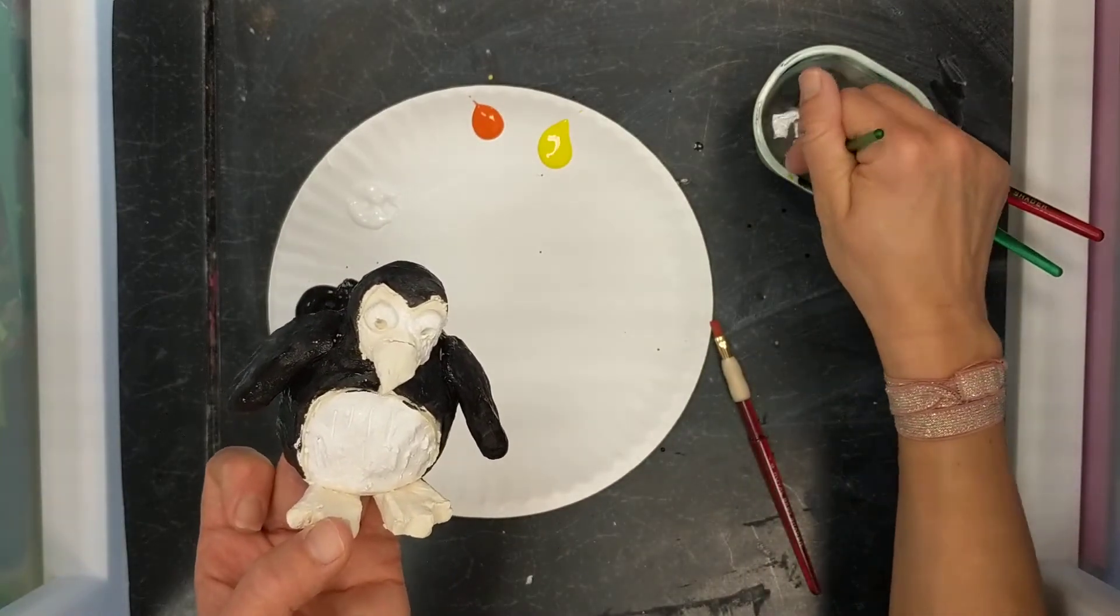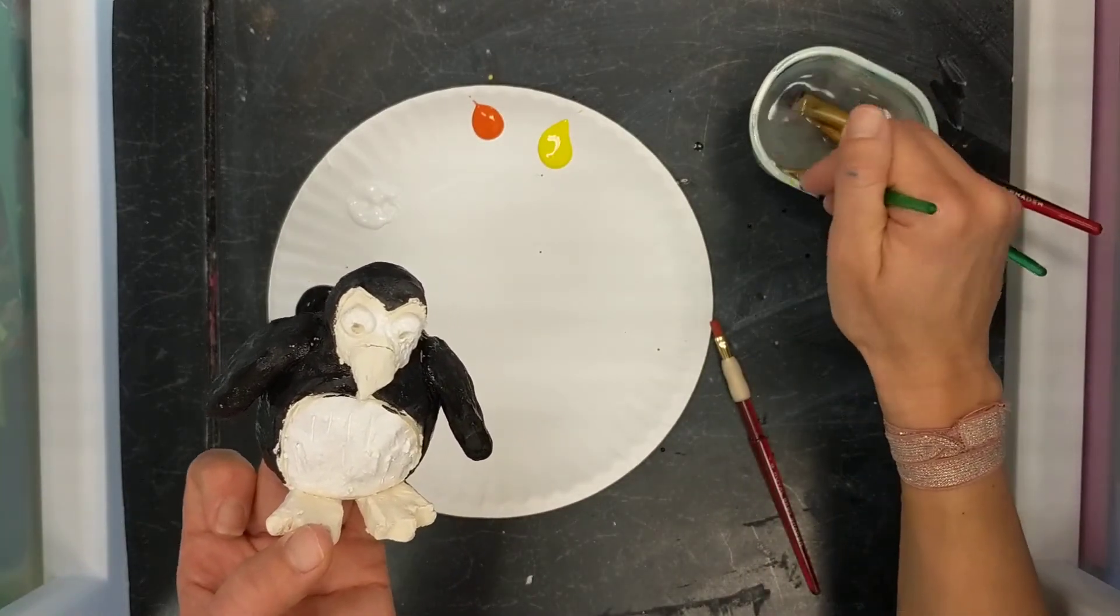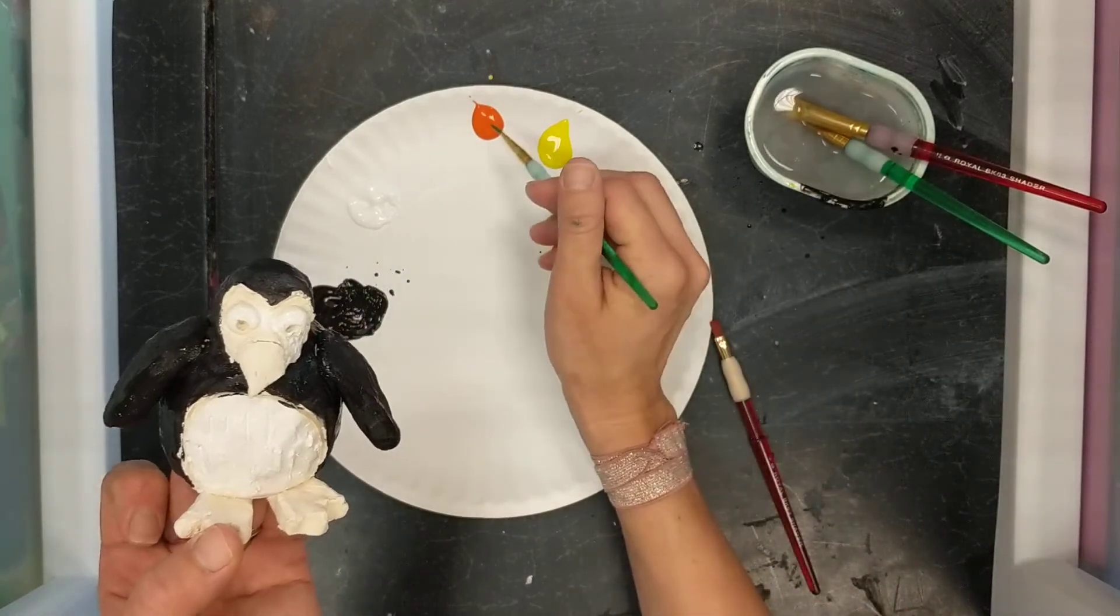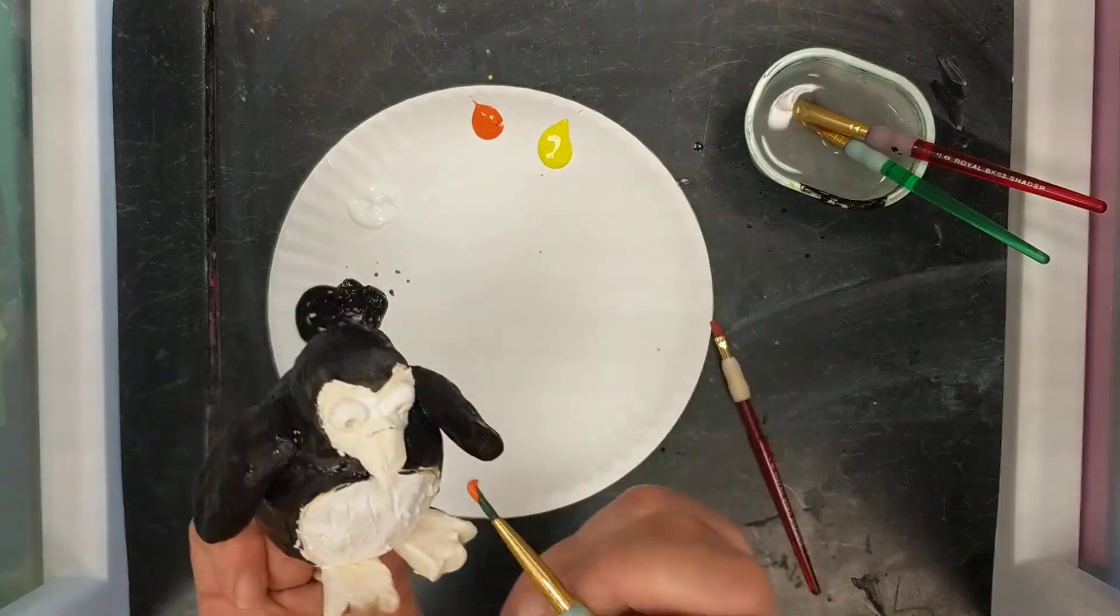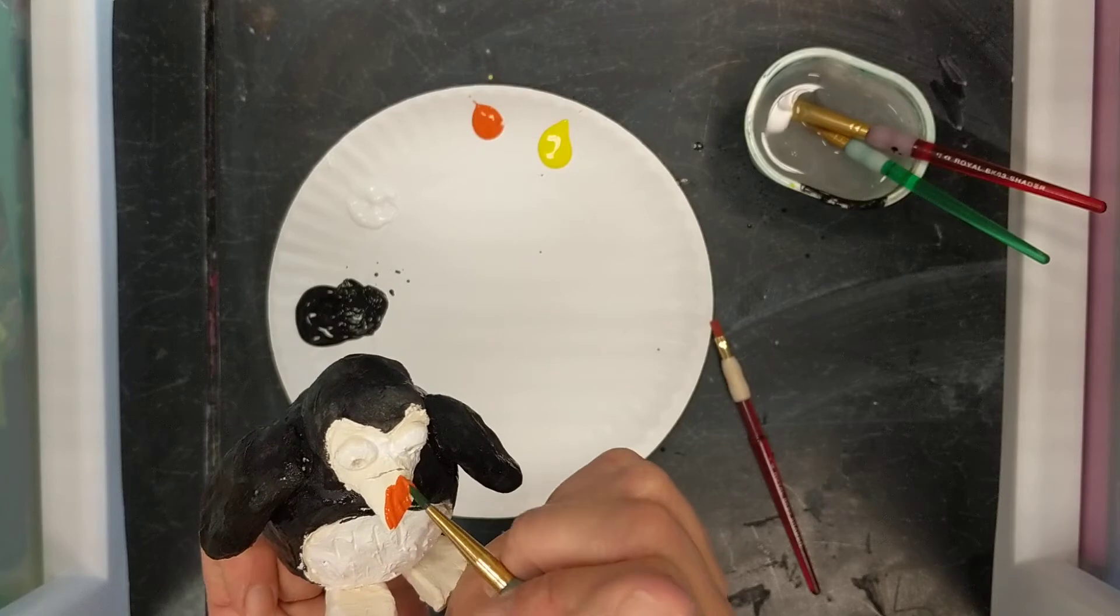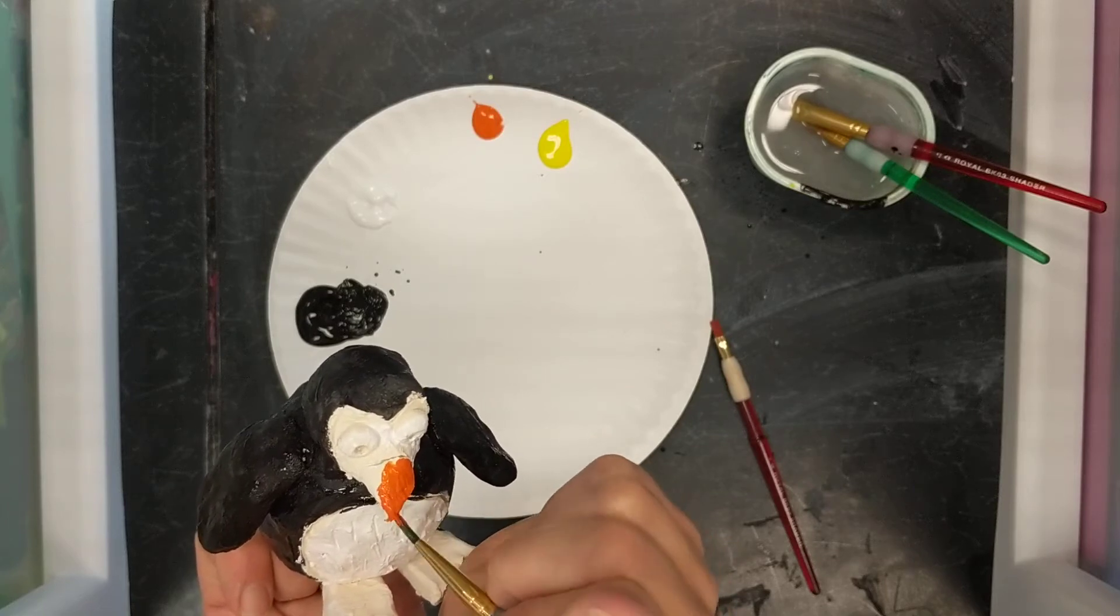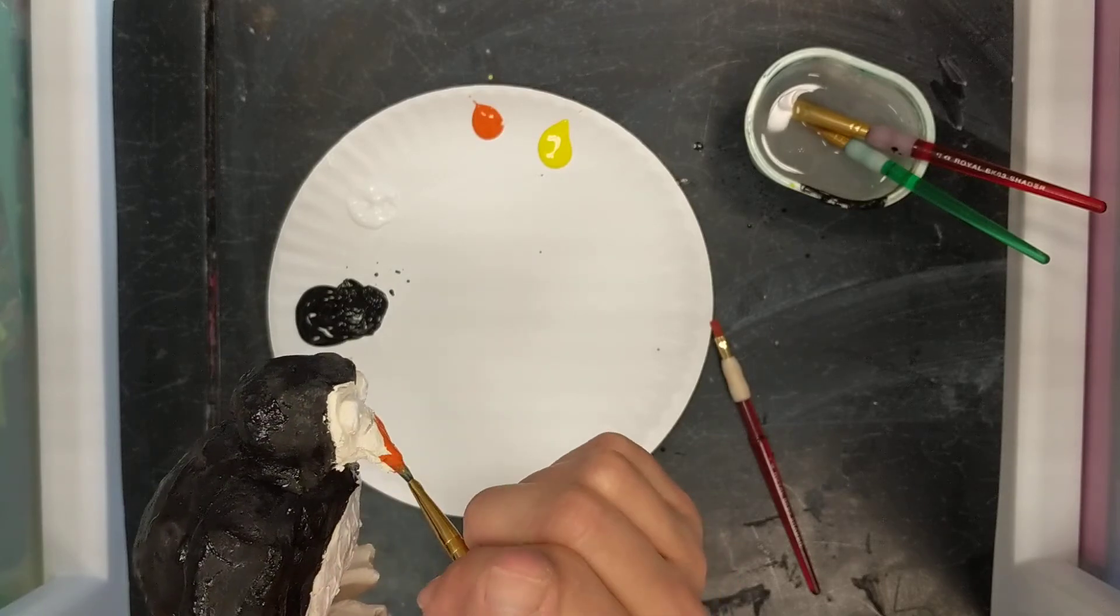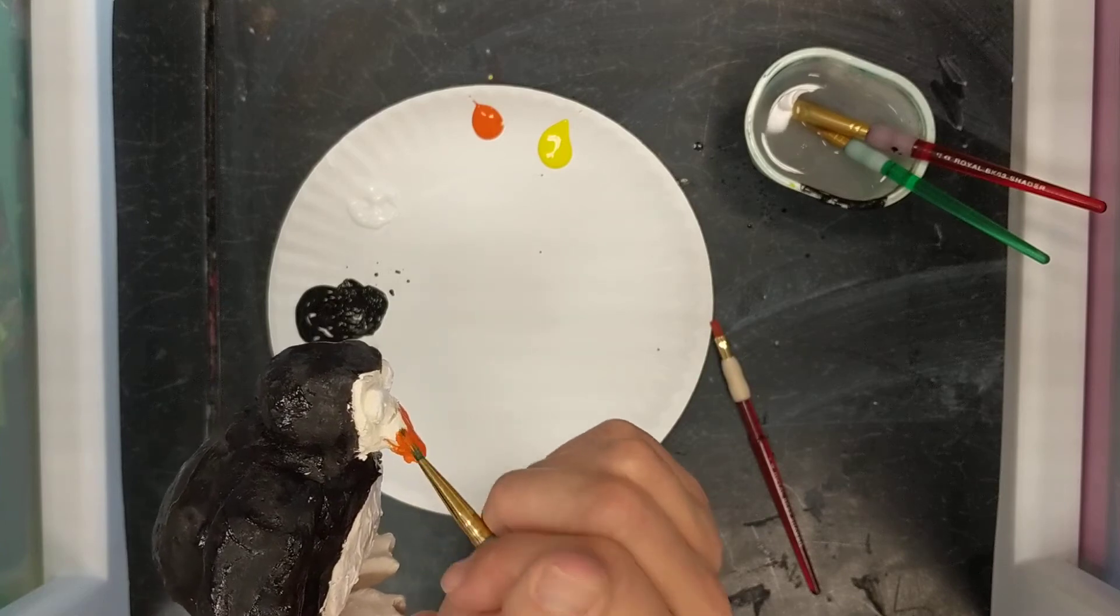And you can see I'm going to keep building it up. If I need to switch colors, make sure you dip in the water, wipe, and swipe for a new color. So if I want to do my beak, I'm careful not to get in my other areas of color.